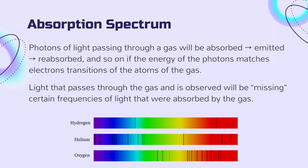The opposite of an emission spectrum would be an absorption spectrum. As light passes through a gas, some of the photons — the ones that match the electron transitions of the atoms of the gas — will be absorbed by the atoms and then emitted and reabsorbed repeatedly. In that way, the light that passes through the gas and is then observed will be missing certain frequencies of light that were basically trapped by the gas. These are essentially the inverse of the emission spectra. Here are some examples for hydrogen, helium, and oxygen.